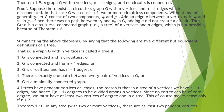Next theorem: a graph G with n vertices, n minus 1 edges, and no circuits is connected. The proof: suppose there is a circuitless graph G with n vertices and n minus 1 edges which is disconnected — we will get a contradiction. G will consist of two or more circuitless components. Without loss of generality, let G consist of components G1 and G2. Add an edge E between vertex V1 in G1 and V2 in G2. Since there was no path between V1 and V2 in G, adding E did not create a circuit. Thus G union E is a circuitless connected graph — a tree with n vertices and n edges — which contradicts the theorem that a tree with n vertices has exactly n minus 1 edges.